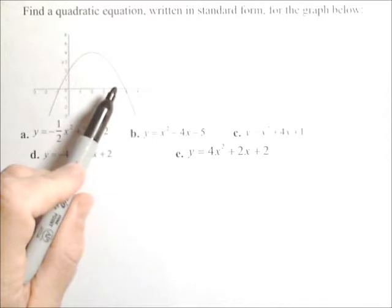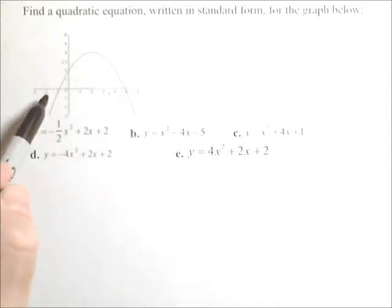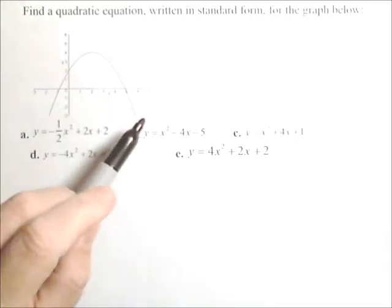Now notice that the quadratic equation doesn't exactly hit the zeros at negative one and five. So instead of trying to use the zeros to find the quadratic, let's just use the characteristics.